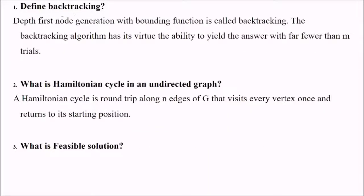Define backtracking. Depth first node generation with bounding function is called backtracking. The backtracking algorithm has its virtue - the ability to yield the answer with far fewer trials. What is Hamiltonian cycle in an undirected graph? This cycle is a round trip along n edges that visits every vertex at least once and returns to its starting position.